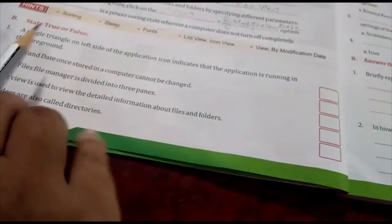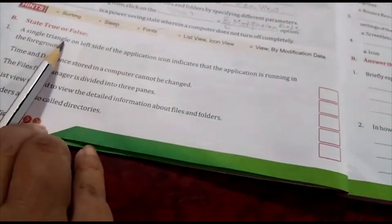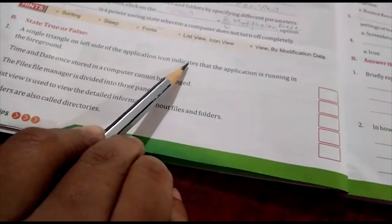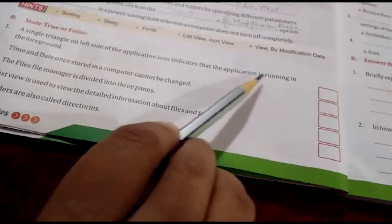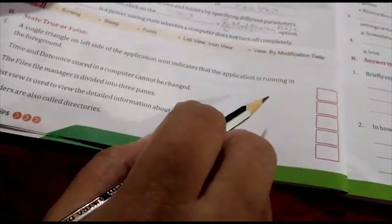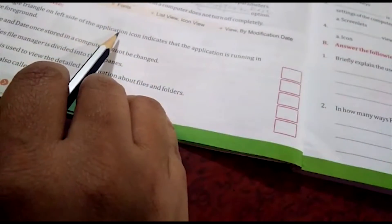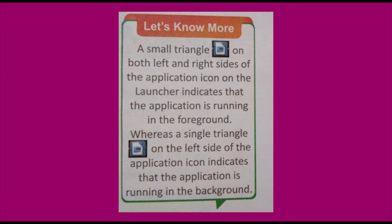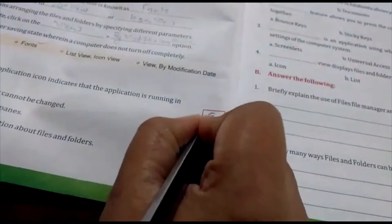Now come to true and false. First one: a single triangle on the left side of the application icon indicates that the application is running in the foreground. This is false, because a single triangle on the left side of the application icon indicates that the application is running in the background.